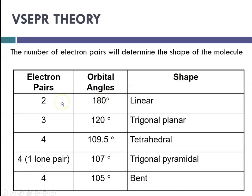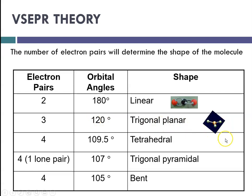This is a chart where we talk about electron pairs, orbital angles, and the shape of the molecule. If there are only two things bonded to a central atom, the farthest apart they can be is linear. If you have three things equally spaced, you end up with a trigonal planar shape. If there are four things, we get something called the tetrahedral shape, with the central atom and four things as far apart as they can get — that angle is 109.5 degrees.